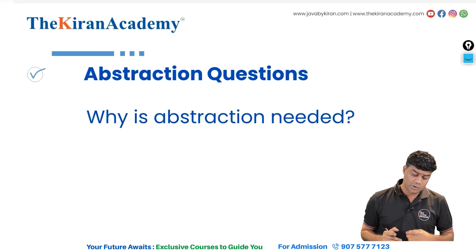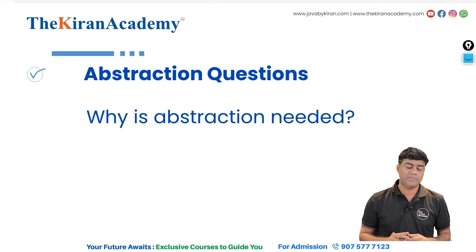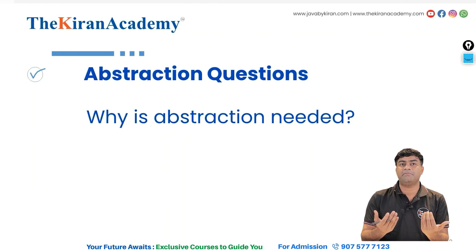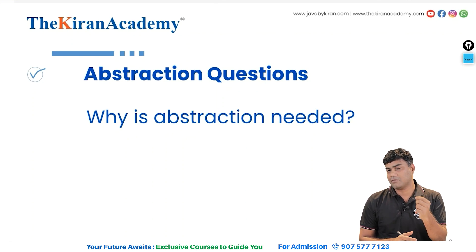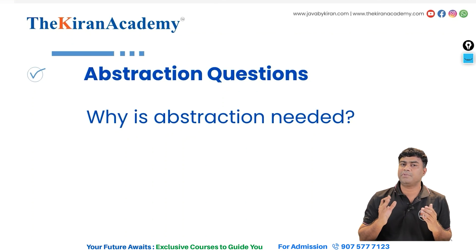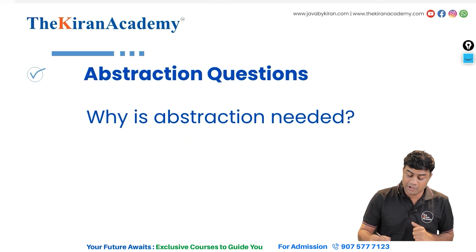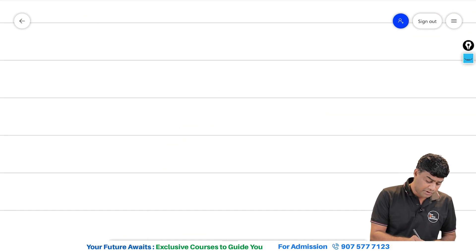Coming to the next question: why is abstraction needed? Abstraction is needed if you want to maintain proper hierarchy, if you want your code to be organized, if you want your code to be maintainable, and if you don't want to expose implementation details but everybody will be implementing your code. For example, give this example in an interview: let's say there is a class called Customer. It has a method called getCost, and if you want different implementations for a retail customer and a different implementation for a wholesale customer. I will draw it because this question is very important.